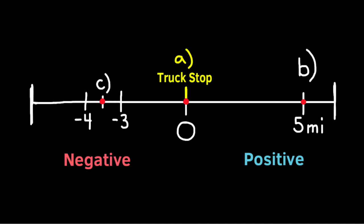The points are placed on the number line: point A is at zero representing the truck stop, point B is at positive five miles representing five miles north, and point C is at negative 3.5 representing 3.5 miles south of the truck stop.